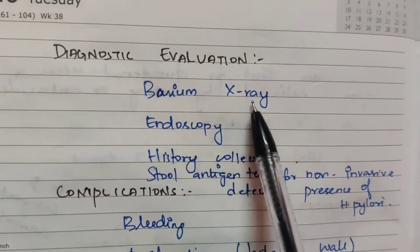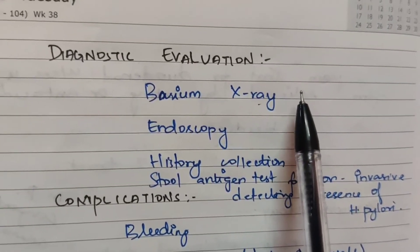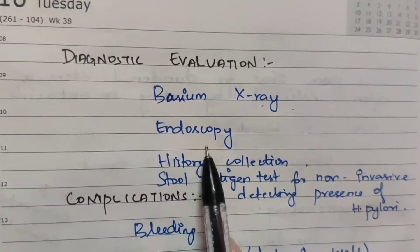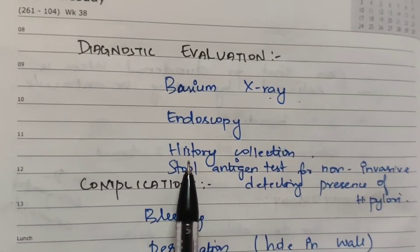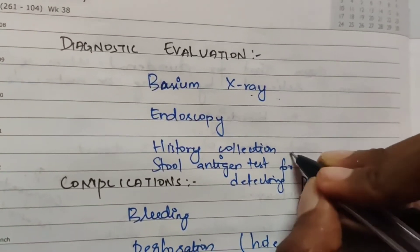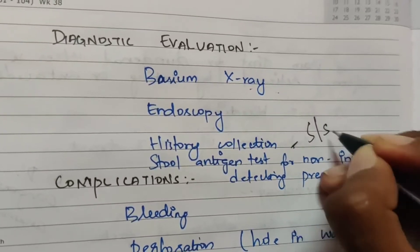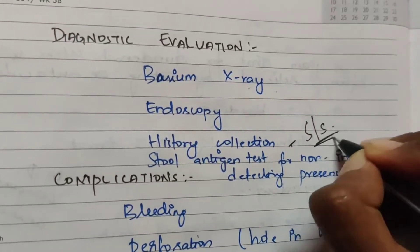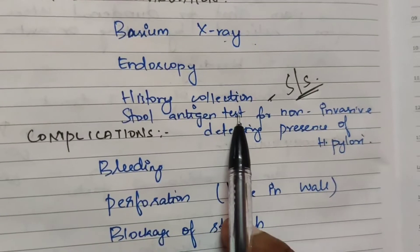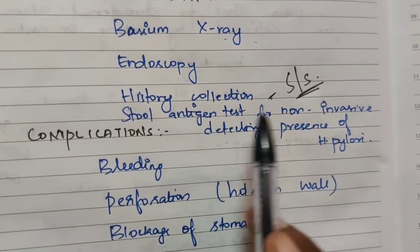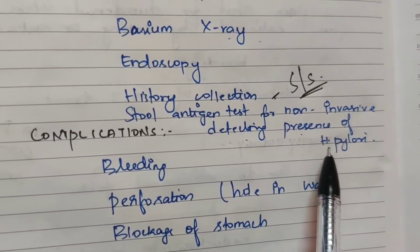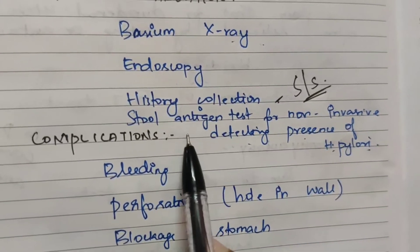Diagnostic evaluation includes: X-ray — barium X-ray; endoscopy; history collection, including signs and symptoms present; and a stool antigen test, which is a non-invasive method for detecting the presence of H. pylori.